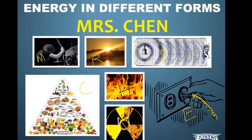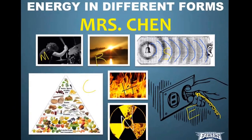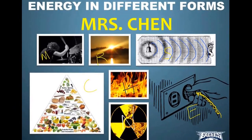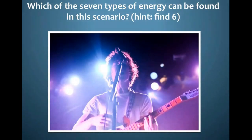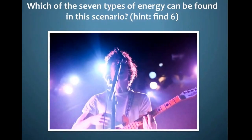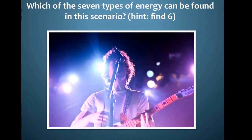Thank you, Mrs. Chen, for helping us remember all the forms of energy. Now let's put our skills to the test. We have a picture of a dude singing at a concert — let's see how many forms of energy you can identify in this picture. Hint: there are six. See if you can find six of the seven forms of energy in this picture. Go!